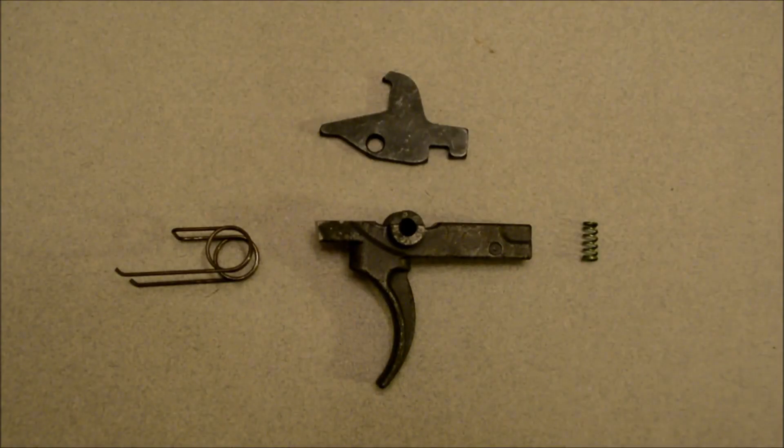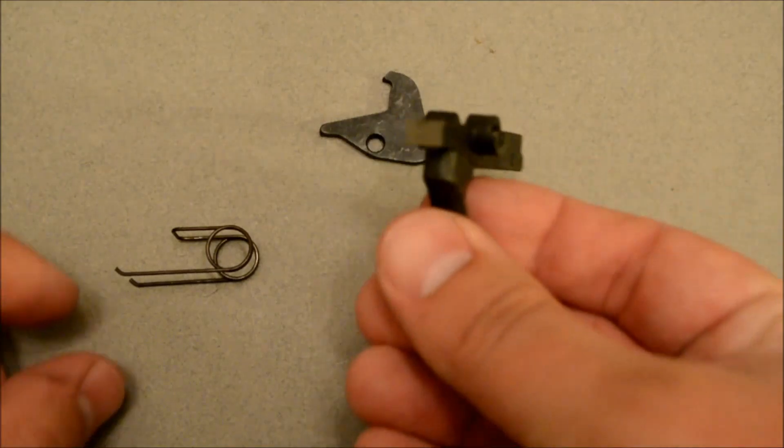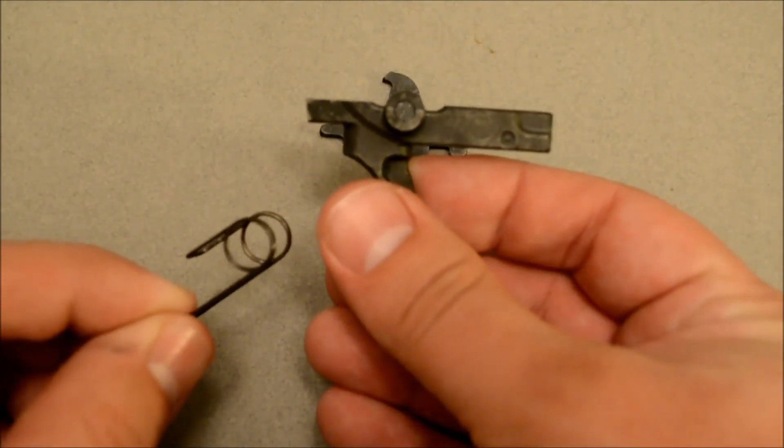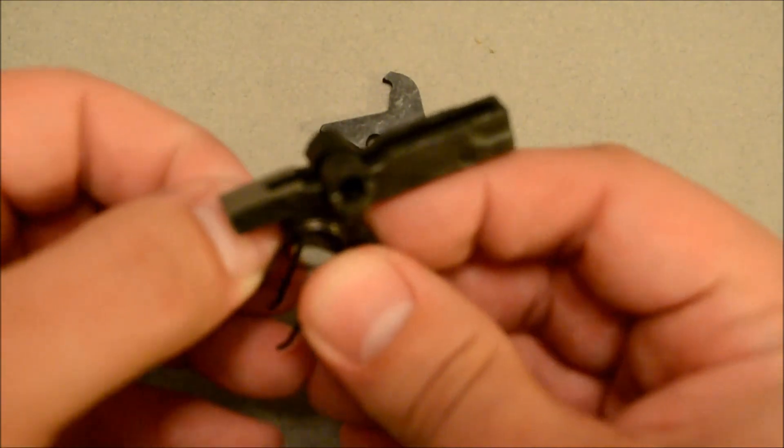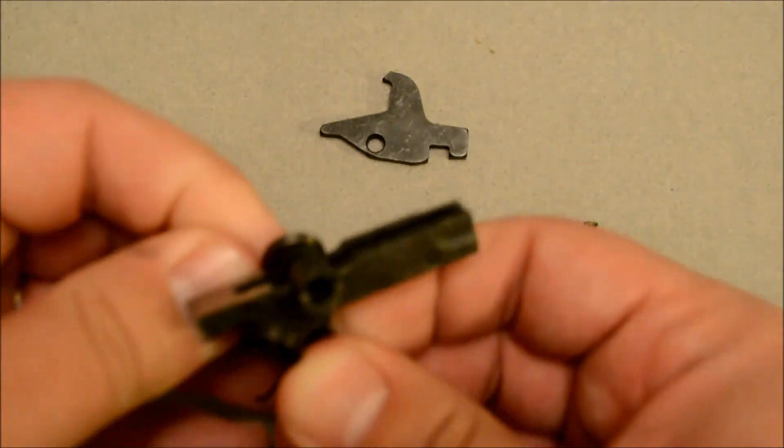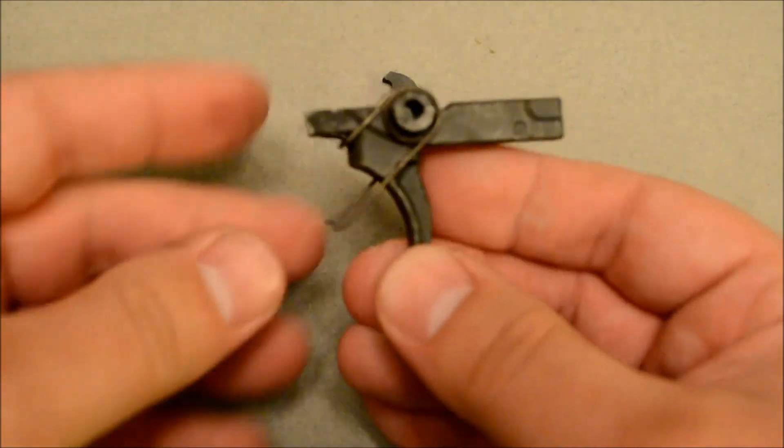Now we're going to start with the trigger assembly comprising of these parts. So first start with your trigger and your trigger spring and you're essentially going to want it looking like this. So go ahead and just put that on just like that.